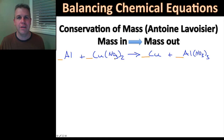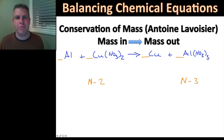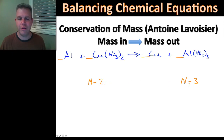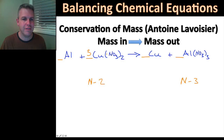I have two nitrogens on this side and three nitrogens on the other side. I need to find the lowest common multiple of two and three, which is six. So I need six nitrogens on each side. I'll put a three in front of Cu(NO₃)₂ — that gives me three coppers, three times two equals six nitrogens, and three times six equals eighteen oxygens on that side.